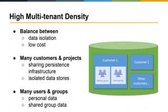The final requirement was high multi-tenant density. As a public platform as a service, we want to host data and APIs for many customers on the same shared infrastructure. We need the best balance between data isolation per customer and low cost — we can't afford to create a new ring for each customer. We also need to handle various access levels: data specific to an individual user, data shared among a group, or public data.